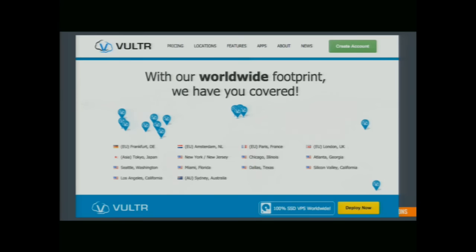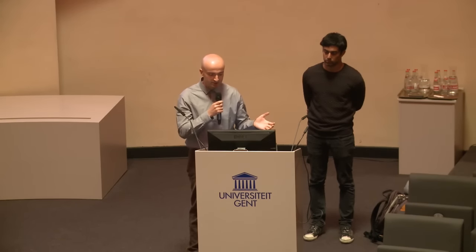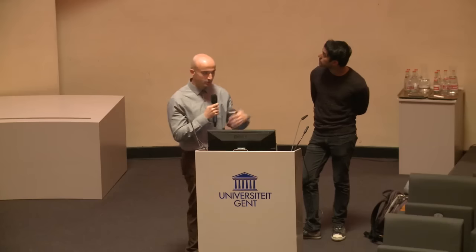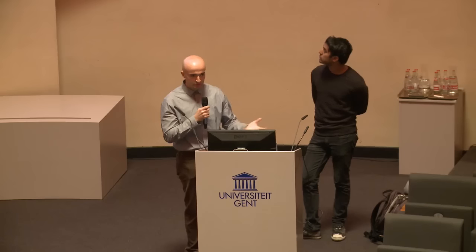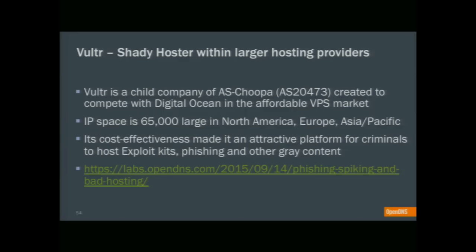Vulture is actually a child company of AS Chupa — a North American hosting company that created Vulture to compete with DigitalOcean on the affordable VPS market. They have a large IP space of about 65,000 IPs spread across ARIN, RIPE, and APNIC. Their cost-effectiveness made them attractive for both legitimate and criminal campaigns. We found they've been used since early this year for exploit kits, phishing, and other malicious content, and we actually wrote a blog last month documenting how we monitored this infrastructure.